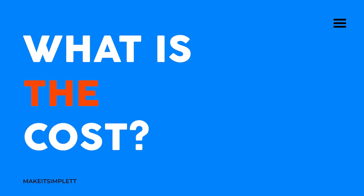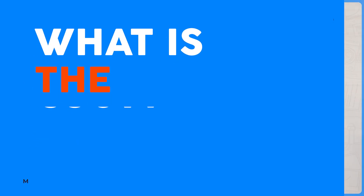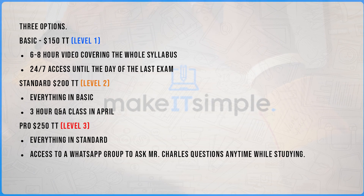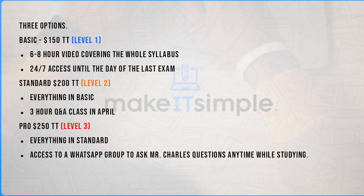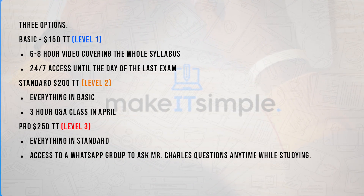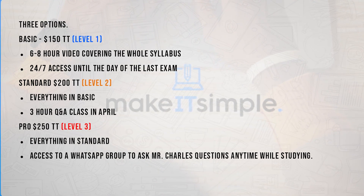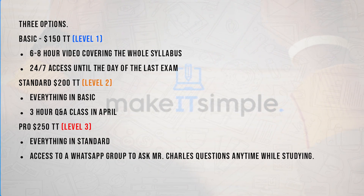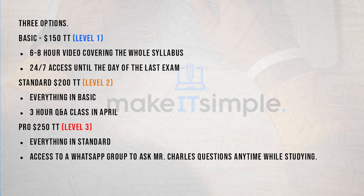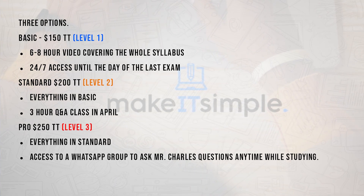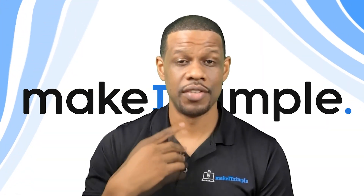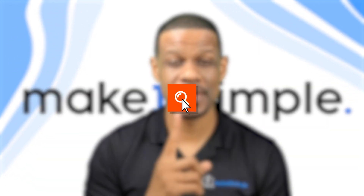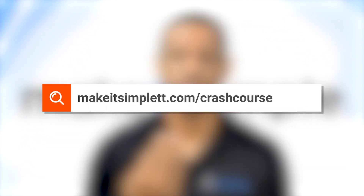What are the costs? For all crash courses — CSEC and CAPE — Basic, which is the video alone, will be $150. Standard will be $200. Pro will be $250, which includes the video, the class, and the WhatsApp group to ask questions at any point in time.